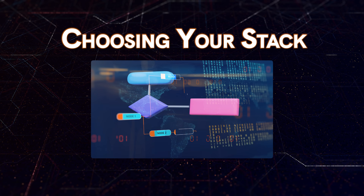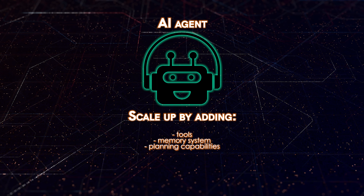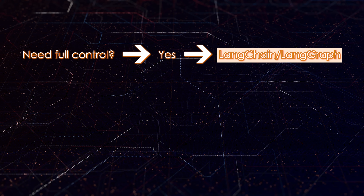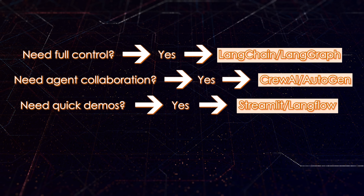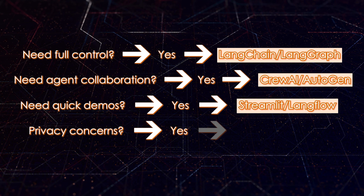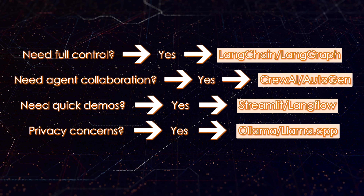So how do you actually choose your stack and architecture? My advice is to start simple: one agent, one clear goal, no complex memory requirements. As you understand the problem better, scale up by adding tools, memory systems, planning capabilities, and team-based approaches. For framework choice, if you need full control go with LangChain or LangGraph; if collaboration between agents is key, use CrewAI; if you need to demo something quickly, use Streamlit and LangFlow; and if privacy is a concern, consider local models with Ollama. What matters most is understanding the fundamental building blocks and trade-offs, then iterating from there.